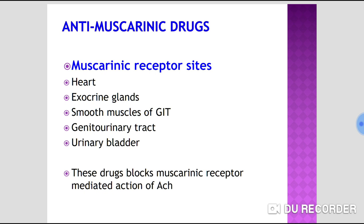Muscarinic receptors are also present on smooth muscles of the GIT, genitourinary tract, and urinary bladder. Anti-muscarinic drugs block the muscarinic receptor-mediated actions of acetylcholine, since most actions of acetylcholine are through muscarinic receptors.